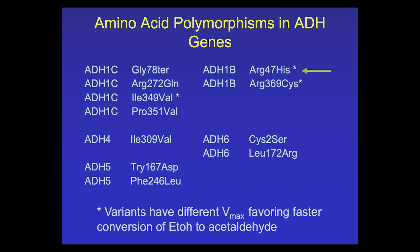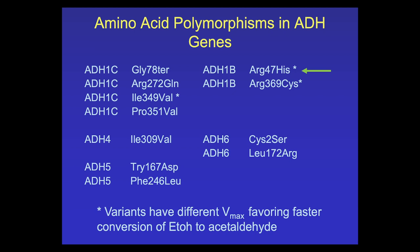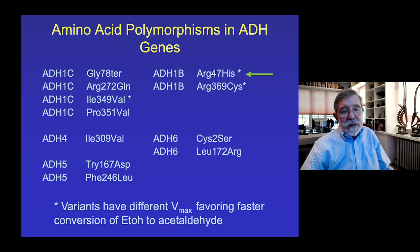There are many amino acid polymorphisms in the ADH genes, and those with stars alter the Vmax and generally favor more rapid conversion of ethanol into acetaldehyde. The most studied variant is the arginine at position 47 to histidine substitution, which has a much higher Vmax and has been associated with alcoholism in many, many studies.